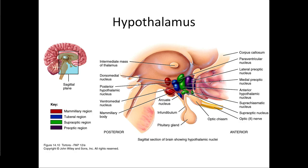Coming into this limbic system — this emotional control system — we reach the hypothalamus. The hypothalamus is part of our brain but also part of our hormonal and endocrine system. This is basically the nervous system control center for our endocrine system. Lots of hormones are either sent directly from the hypothalamus or controlled by signals from it.